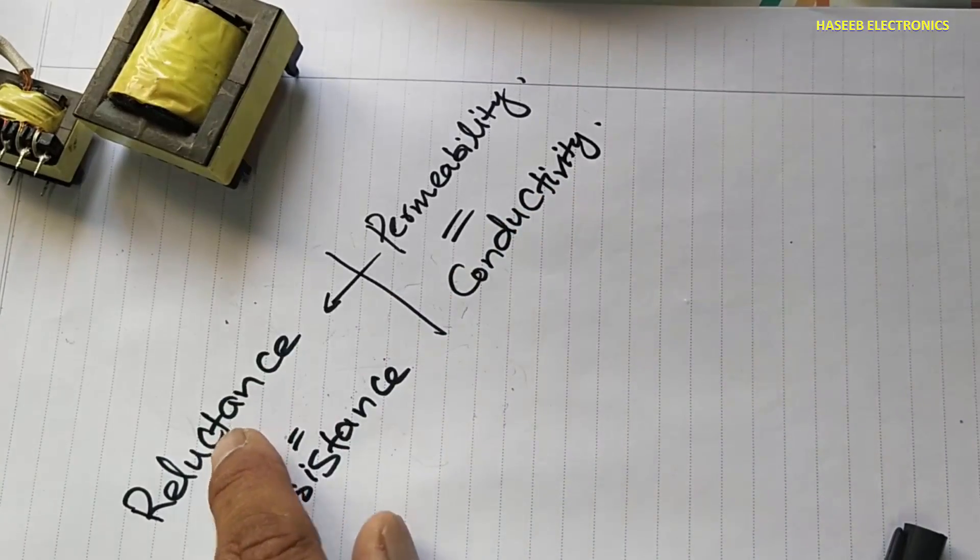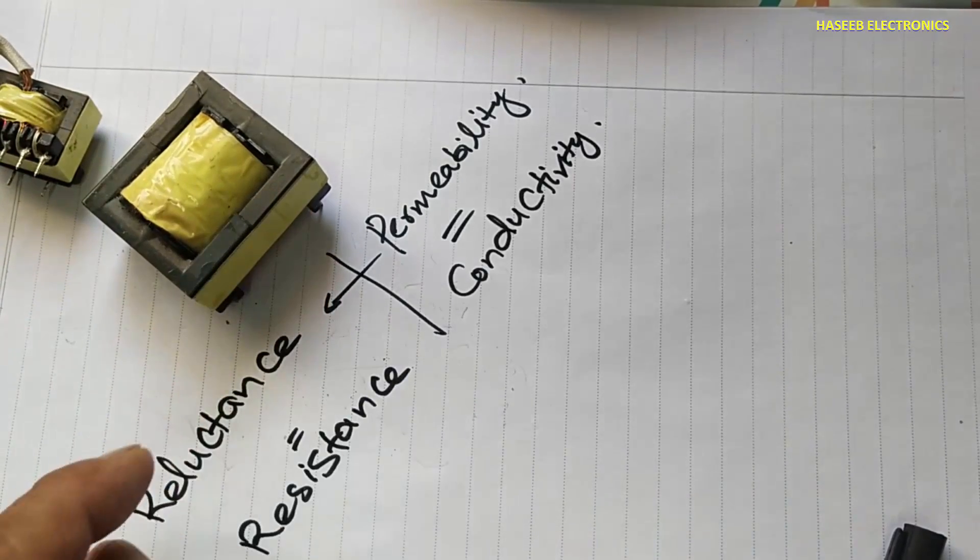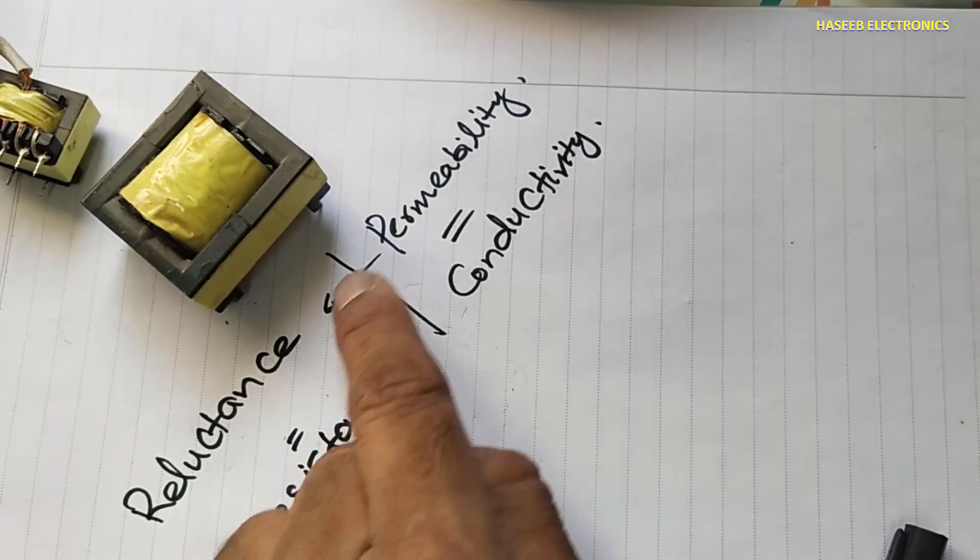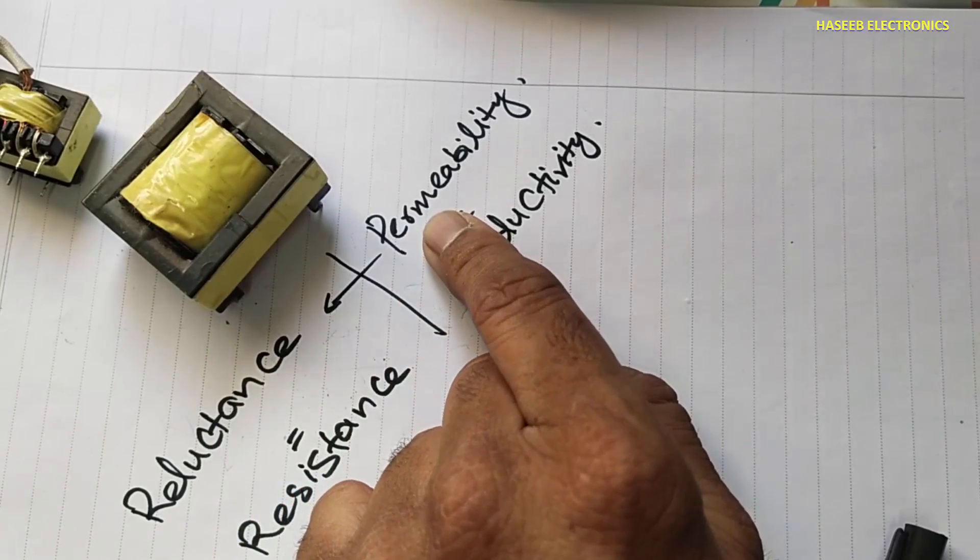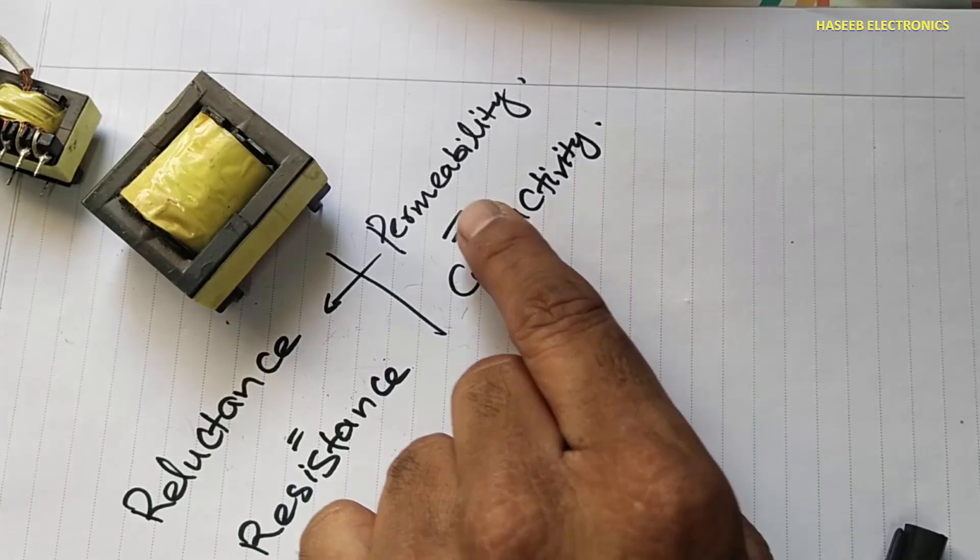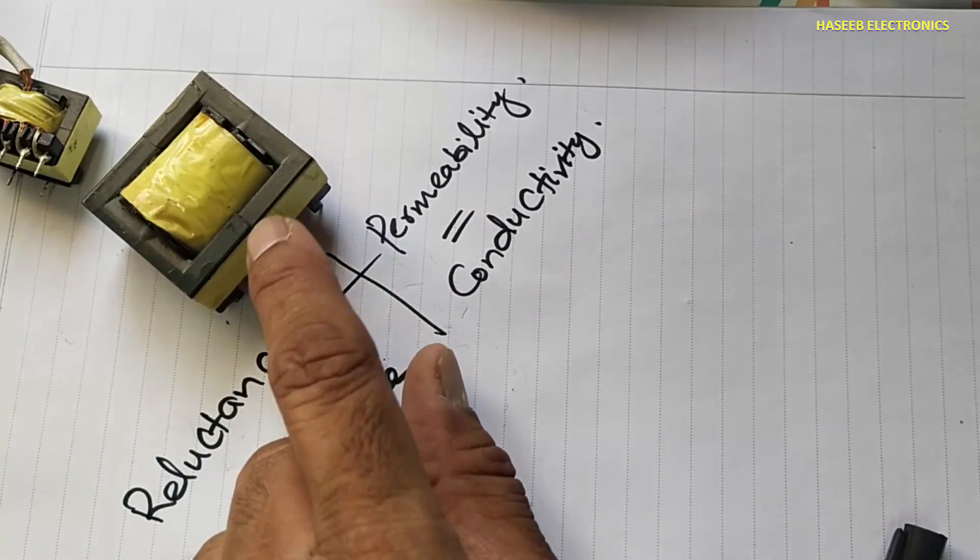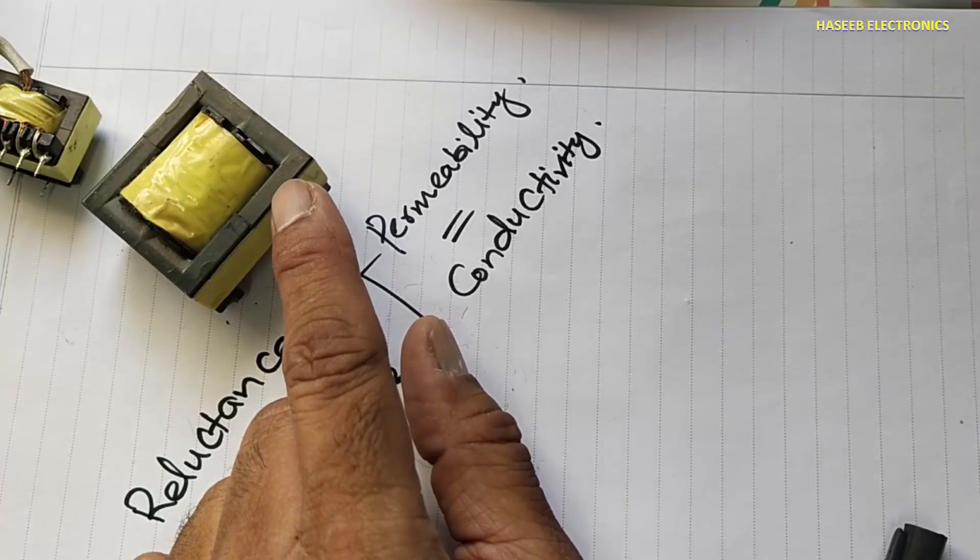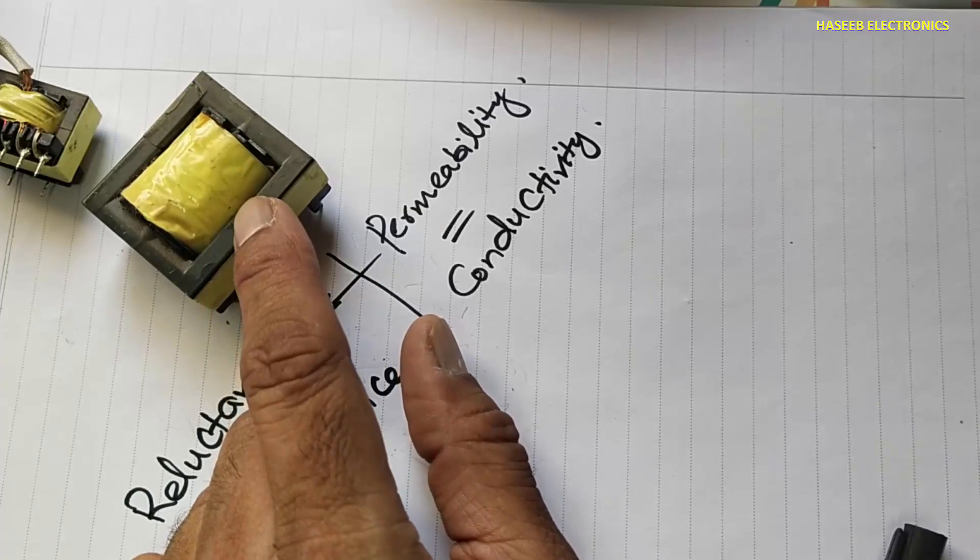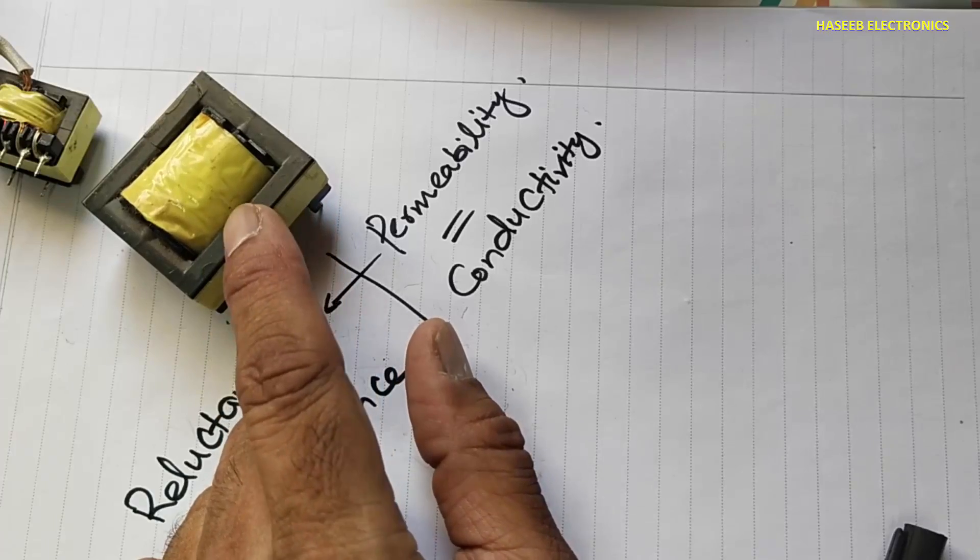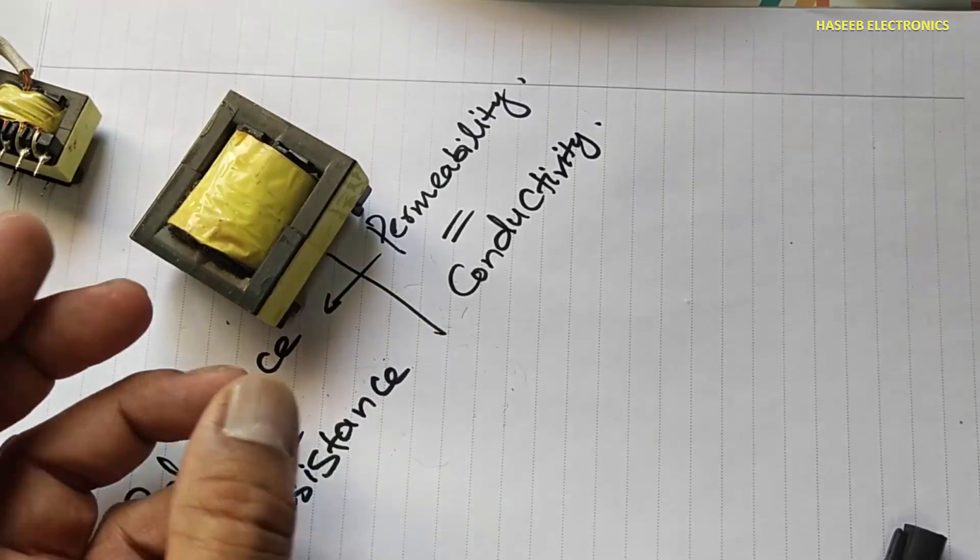How much resistance it will allow to magnetic lines of forces, that is called reluctance. Here it is called permeability, conductivity. How ease will be provided from this material, it will depend on the type of material. If it is ferrite, manganese, nickel, zinc, different alloy materials are there.